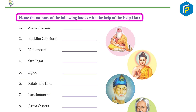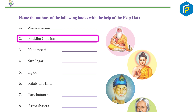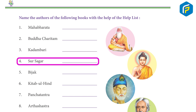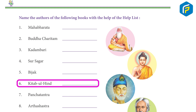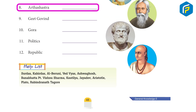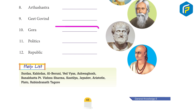Name the authors of the following books: one, 'Mahabharata' - Ved Vyas; two, 'Buddha Charitam' - Ashwa Ghosh; three, 'Kadambari' - Banna Bhatra; four, 'Sur Sagar' - Sur Das; five, 'Bijak' - Kabir Das; six, 'Kitab-ul-Hind' - Al Biruni; seven, 'Panch Tantra' - Pandit Vishnu Sharma; eight, 'Arth Shastra' - Chanakya; nine, 'Geet Govind' - Jayadev; ten, 'Gora' - Rabindranath Tagore.